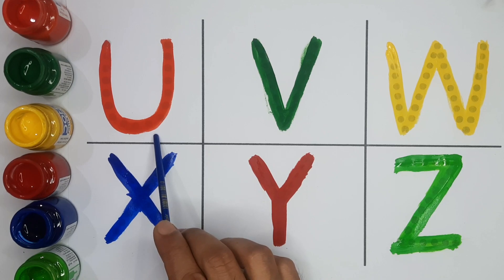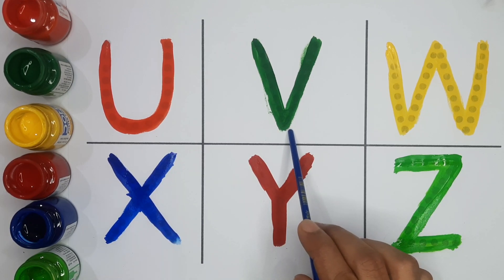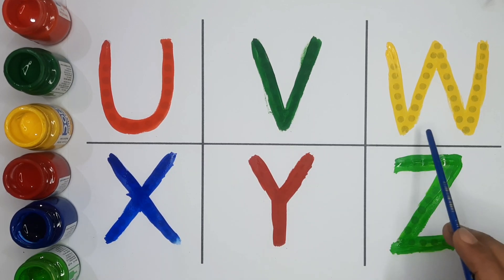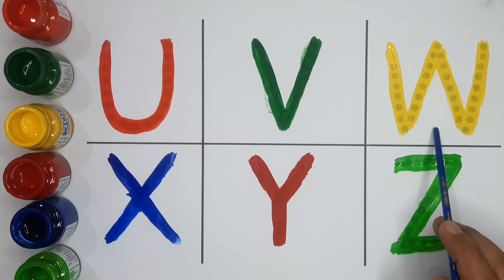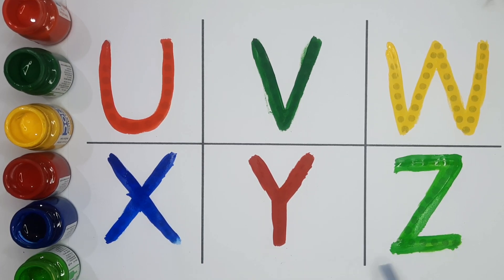U, U for umbrella. V, V for vehicle. W for watermelon. X, X for x-ray. Y, Y for yard. Z, Z for zero. Thank you!